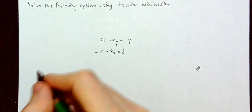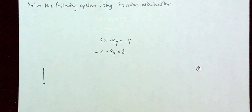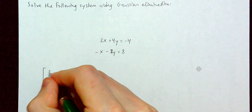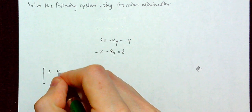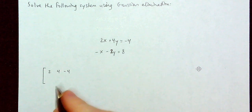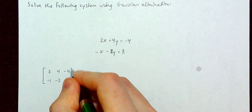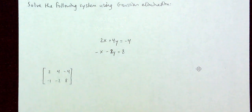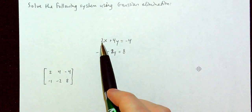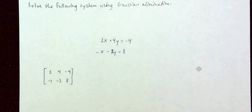So we are going to have 2, 4, negative 4, and then negative 1, negative 2, 8. We're just taking the coefficients and putting them in the corresponding spot of our matrix.